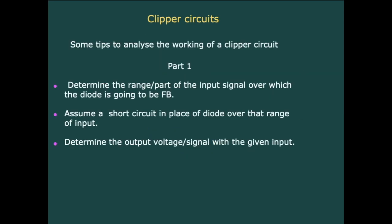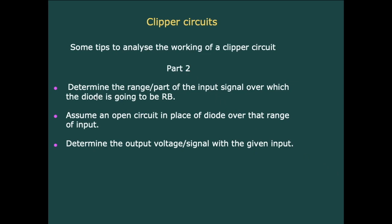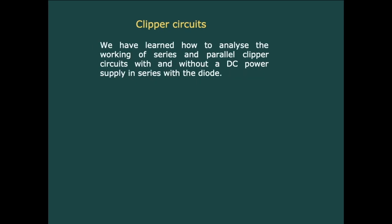Here are some tips to analyze the working of a clipper circuit. Part 1: determine the range of the input signal over which the diode is forward biased, then assume a short circuit in place of the diode and determine the output voltage over that range. Part 2: determine the range over which the diode is reverse biased, assume an open circuit in place of the diode, and determine the output voltage. We have learned to analyze series and parallel clipper circuits with and without a DC power supply in series with the diode.